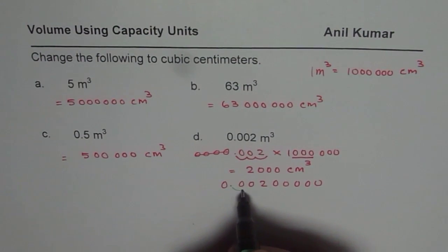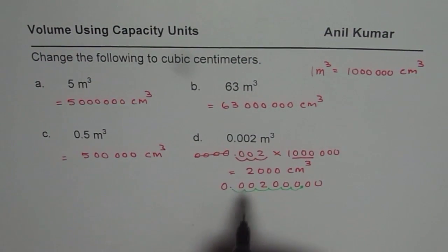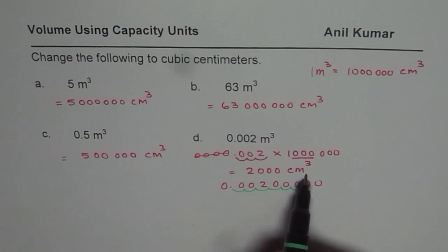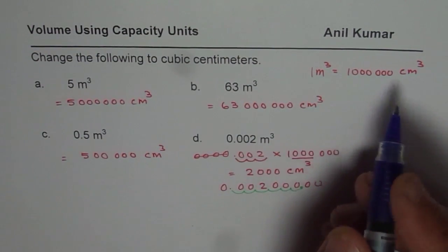1, 2, 3, 4, 5, 6. The decimal comes here. That means you get 2,000—2,000 centimeter cube. That is what happens when you multiply by 1,000,000.